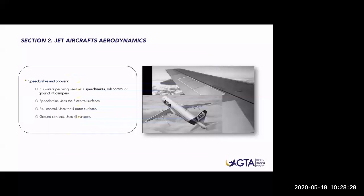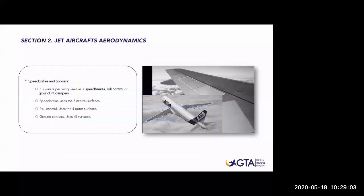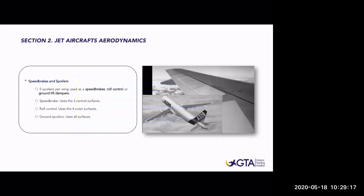Dutch roll is an oscillatory stability issue associated with swept wing jet aircraft — basically a combination of yawing and rolling motions. Dutch roll is caused by swept wings. The recovery technique from Dutch roll is to apply rudder rather than aileron, as applying aileron makes the situation worse. Yaw dampers prevent Dutch roll, and of course the A320 has yaw dampers.